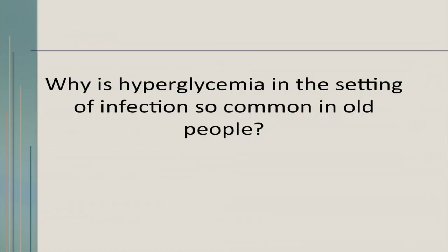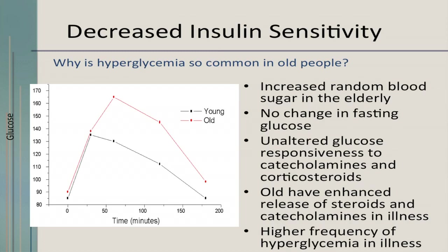Why is hyperglycemia in the setting of infection so common in older people? There's a big bounce in blood sugar level because there's decreased insulin sensitivity. There are increased random blood sugars in the elderly, although their fasting glucose doesn't change. Glucose responsiveness becomes altered even when catecholamines and corticosteroids are on board. They have enhanced release of steroids and catecholamines in illness, but a higher frequency of hyperglycemia.